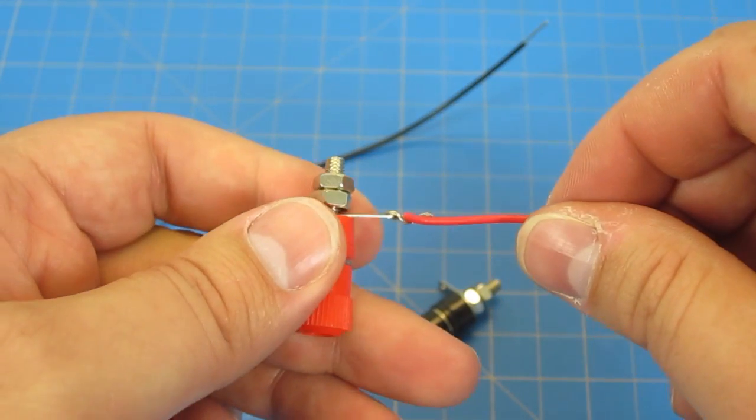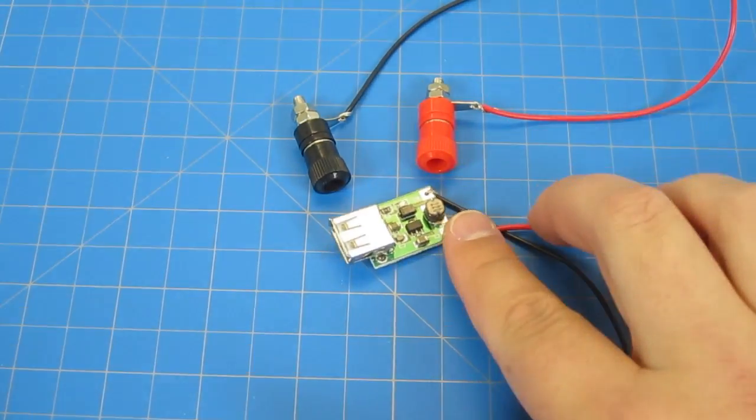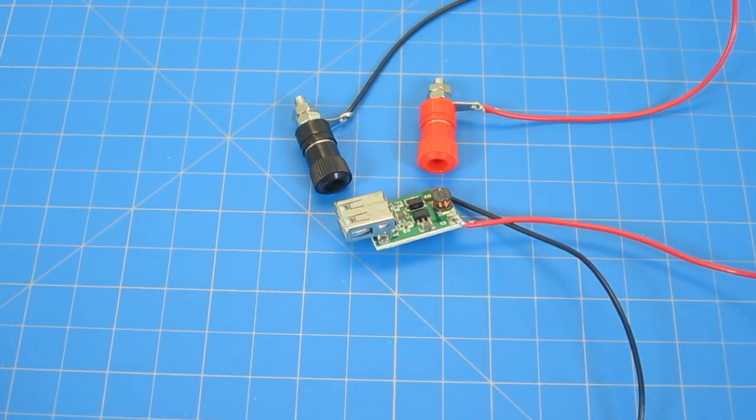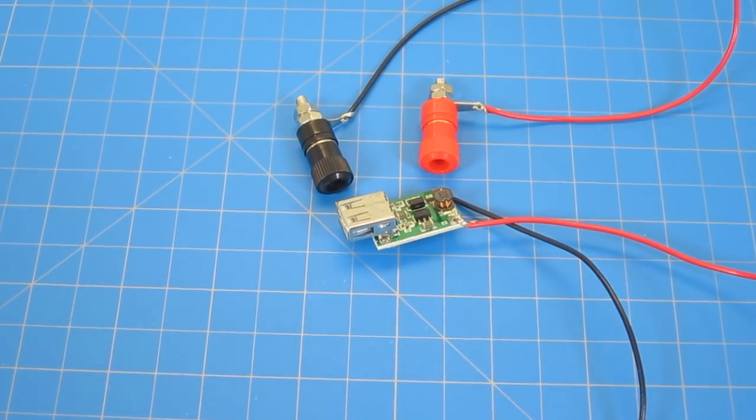Do the same thing for the black output port as well. When you're finished, you should now have your USB circuit and your two output ports all wired up using all of the long black and red wire. Both ends of that should be stripped off and ready to be used.